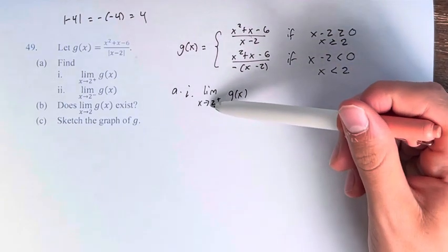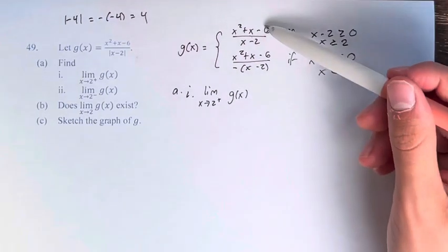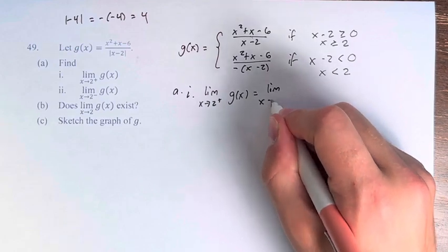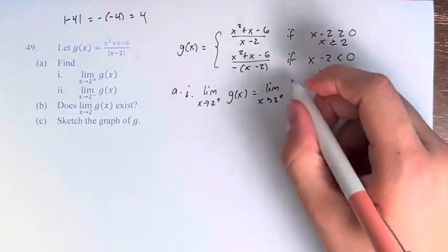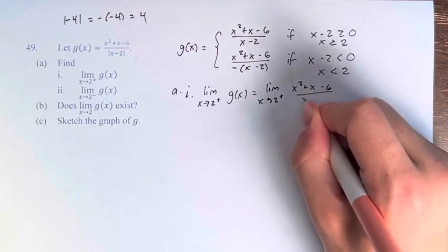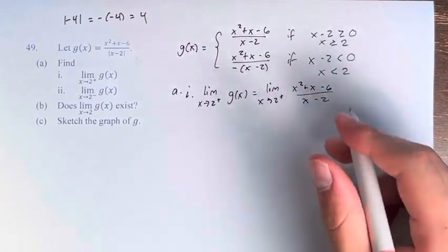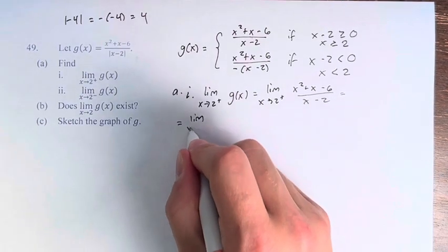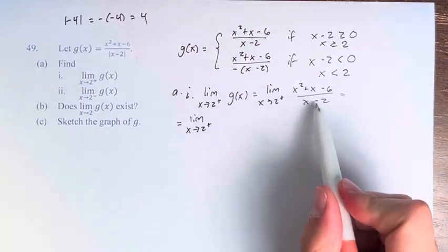So x is approaching 2 from the right, that means x is greater than 2, which means we just use this fraction. So this is the limit as x approaches 2 from the right of x squared plus x minus 6 over x minus 2.